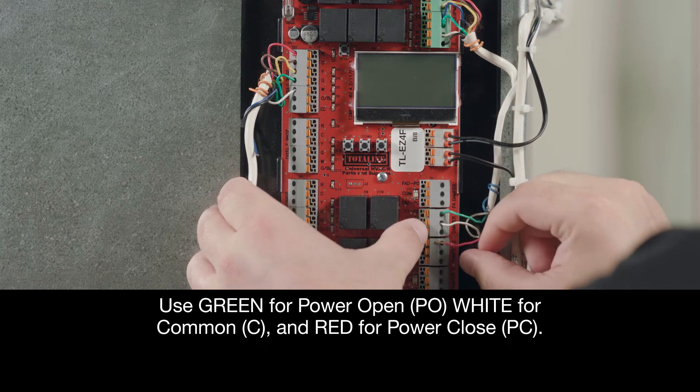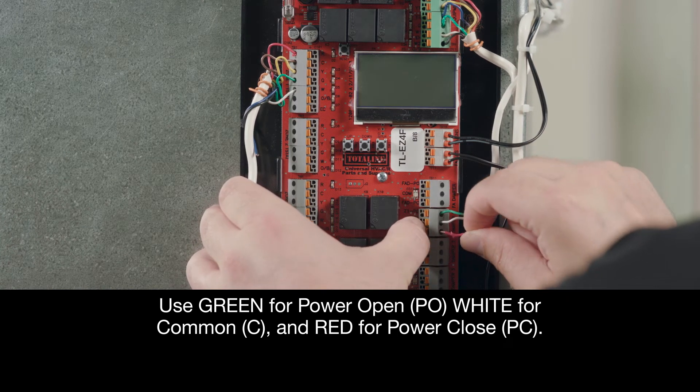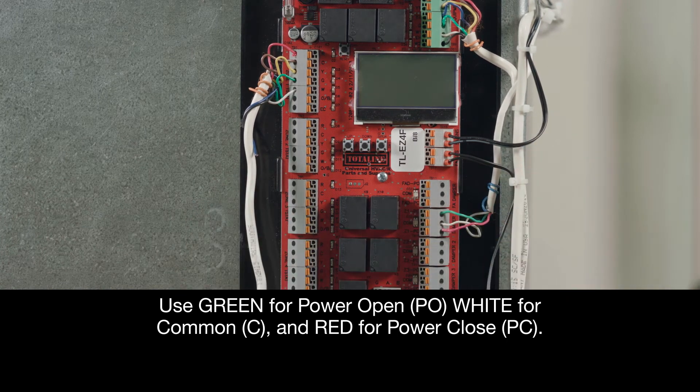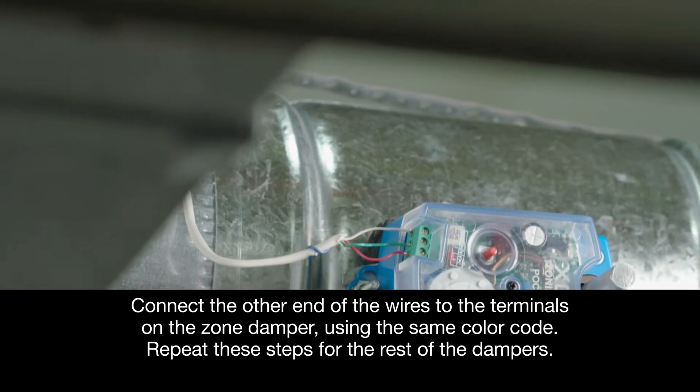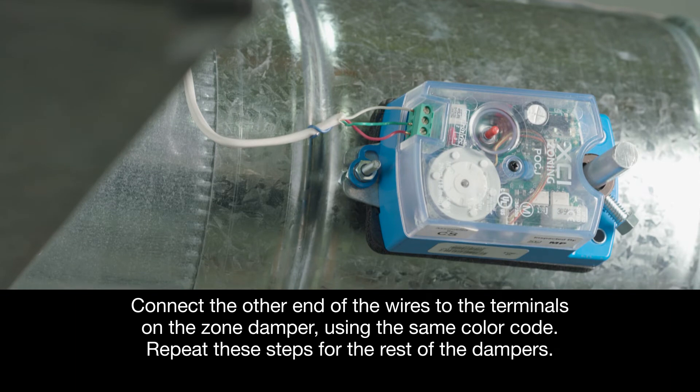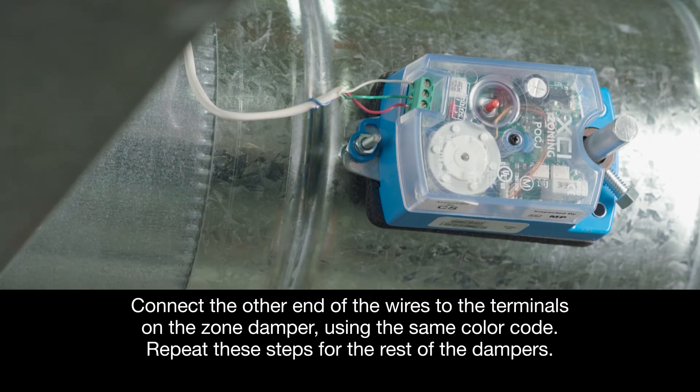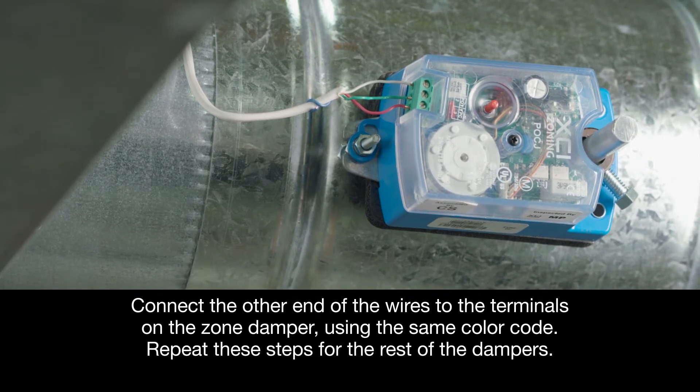Use green for power open, or PO, white for common, or C, and red for power close, PC. Connect the other end of the wires to the terminals on the zone damper using the same color code. Then, repeat these steps for the rest of the dampers.